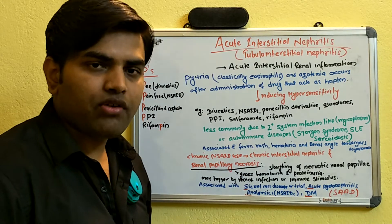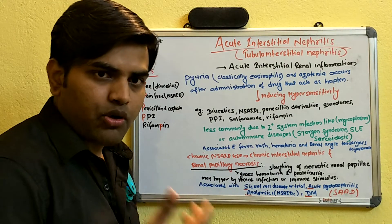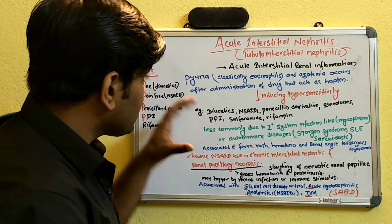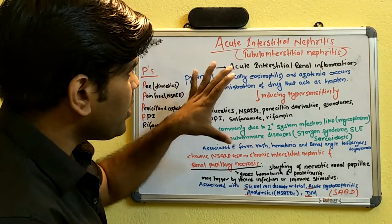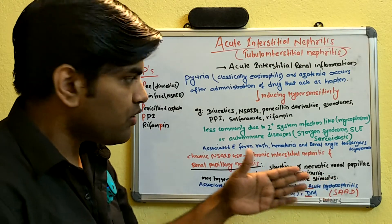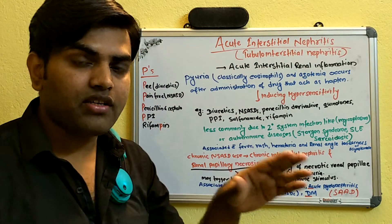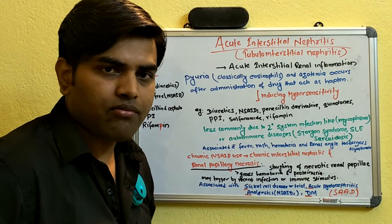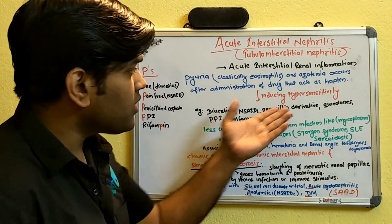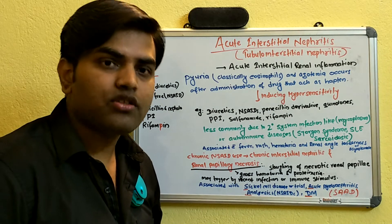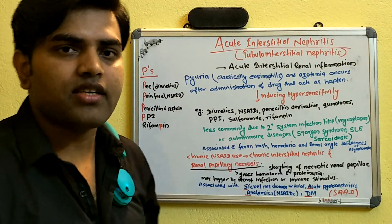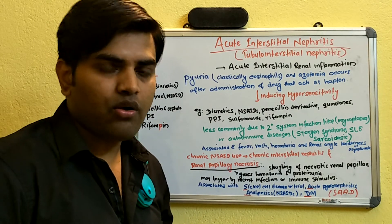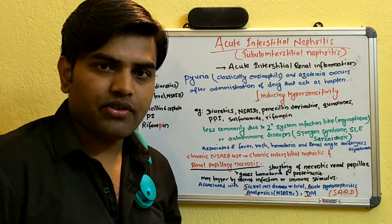In summary, you should not confuse acute interstitial nephritis with acute tubular necrosis or renal papillary necrosis or cortical necrosis — these are distinct entities. Clinically, both ATN and AIN can occur after drug administration. Common culprits include diuretics, NSAIDs, and penicillin antibiotics. Since most drugs are excreted by the kidney, it is important to keep these renal side effects in mind. Hope this is helpful — see you in the next video.